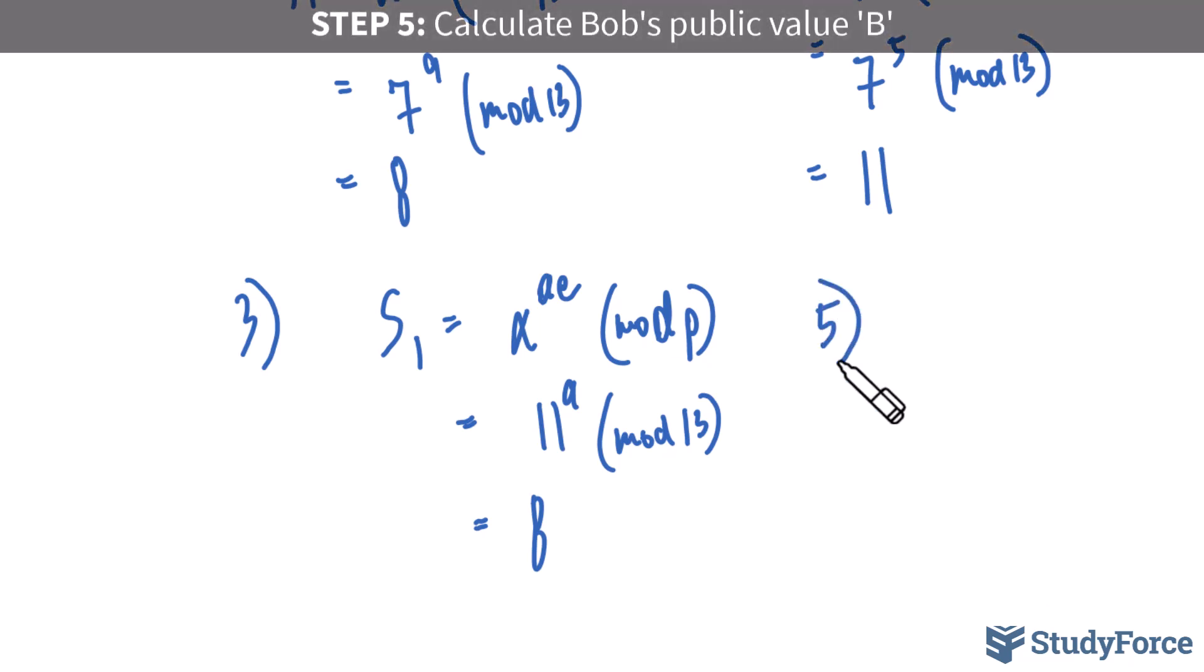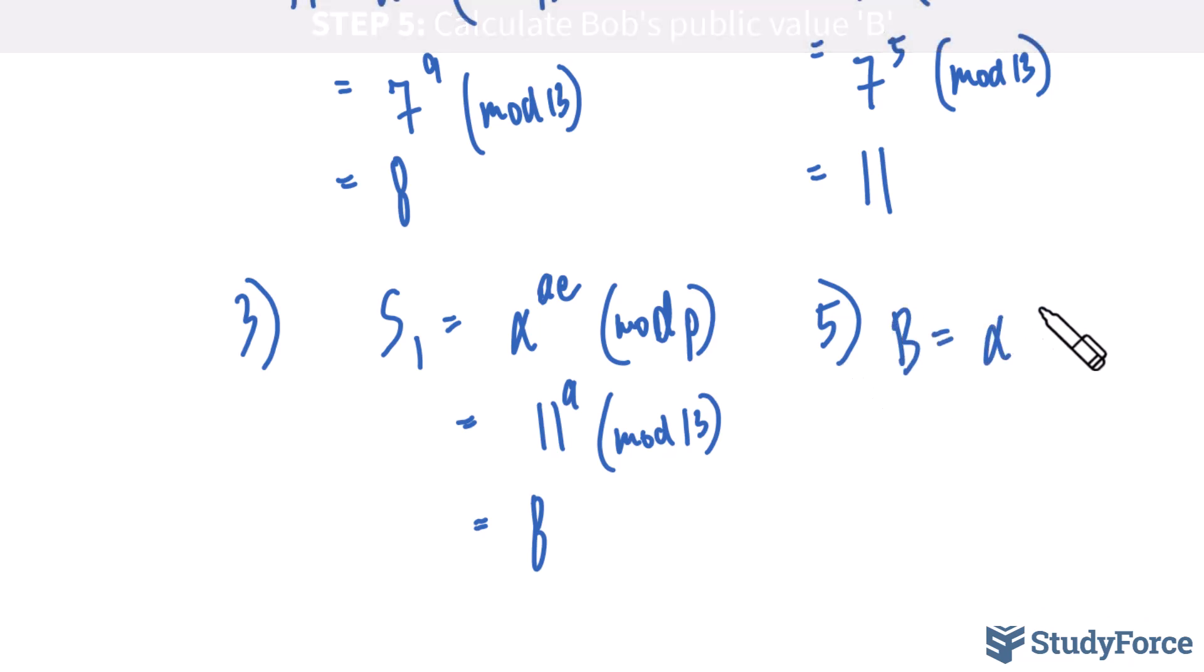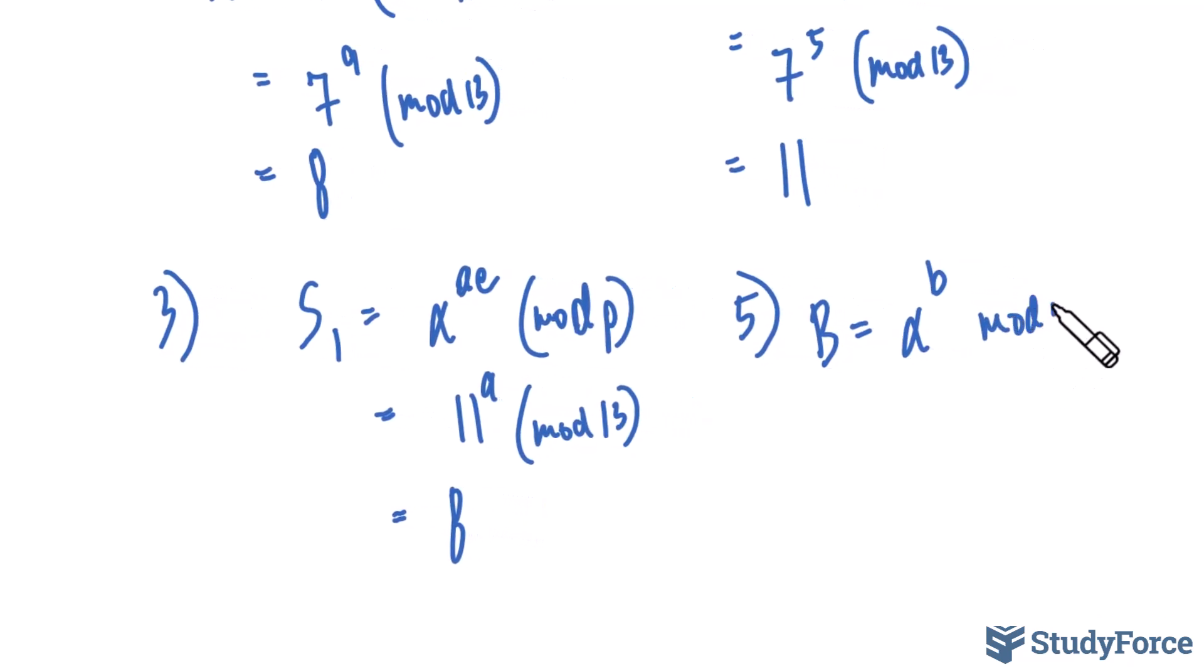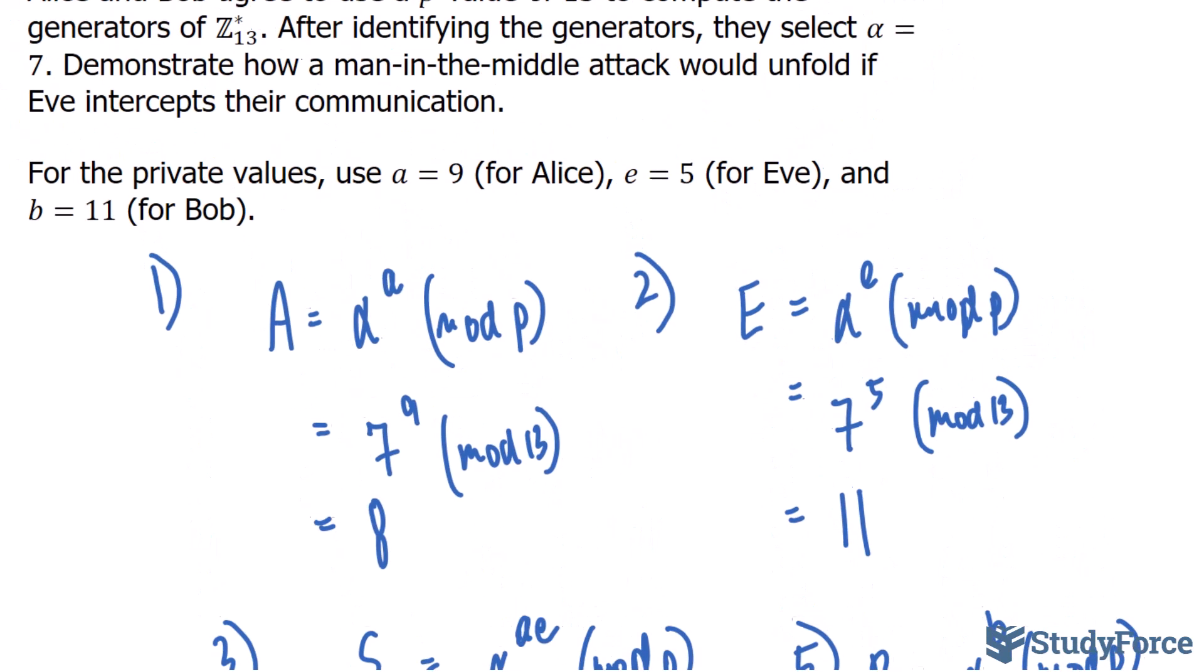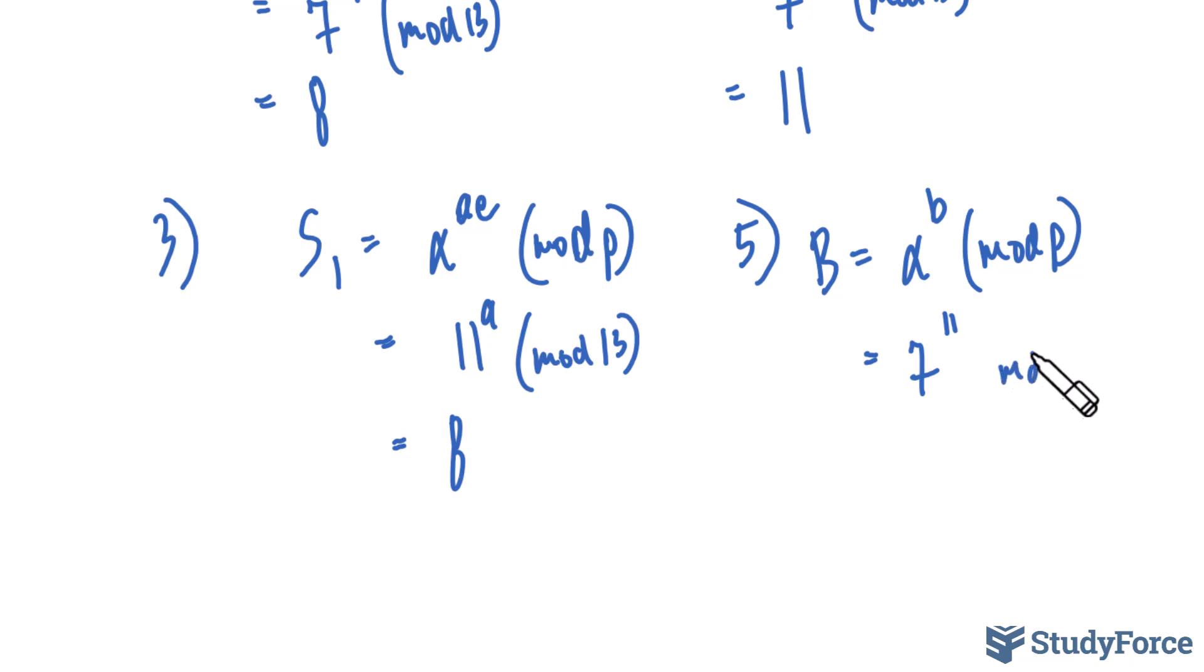In step number five, Bob calculates his public value B. We'll calculate this by taking alpha, raising it to the power of lowercase b, mod p. Let's fill this in. We have 7, and recall the value of lowercase b was 11, mod 13. Now if you compute this, you'll end up with a value of 2. And this gets sent to Eve without Bob realizing it.